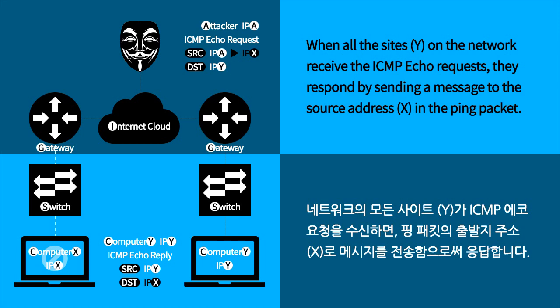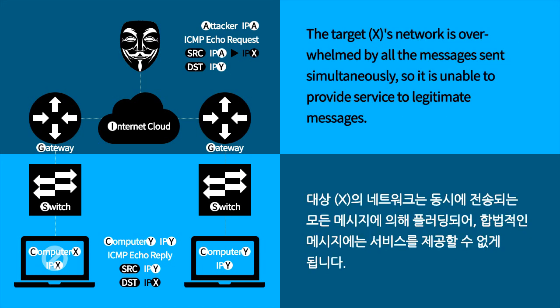When all the sites Y on the network receive the ICMP echo requests, they respond by sending a message to the source address X in the ping packet. The target X's network is overwhelmed by all the messages sent simultaneously, so it is unable to provide service to legitimate messages.